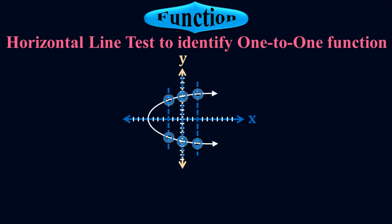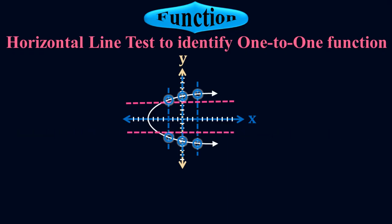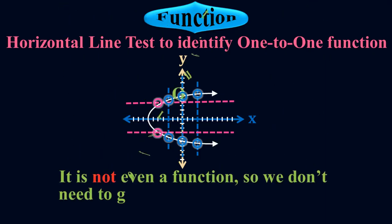But what if I apply the horizontal line test? The horizontal line passes through the graph at single points. But as I said, it is not even a function, so we don't need to check the one-to-one feature. There is no need to check whether it is a one-to-one function, because it is not even a function.